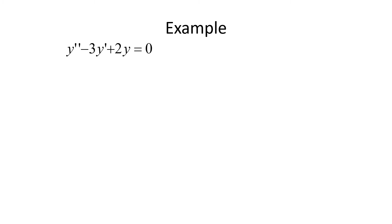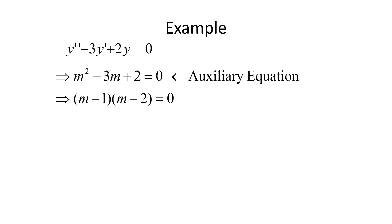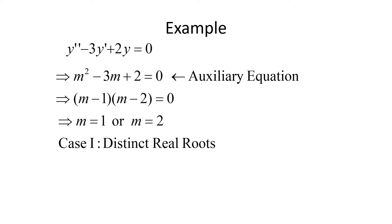Second example: solve y double prime minus 3y prime plus 2y equals 0. We form the auxiliary equation: m squared minus 3m plus 2 equals 0. We factor this as m minus 2 times m minus 1 equals 0, giving roots m equals 1 or m equals 2. These are distinct real roots, so this is case 1. Our solution is y equals c1 e to the x plus c2 e to the 2x. Note that the order doesn't matter — c1 e to the 2x plus c2 e to the x would also be valid.